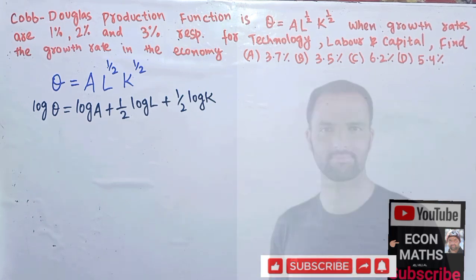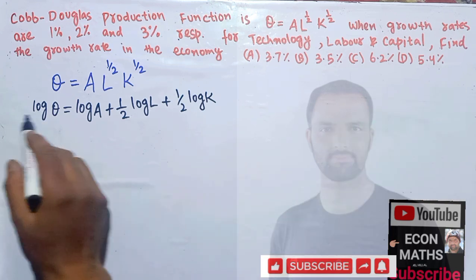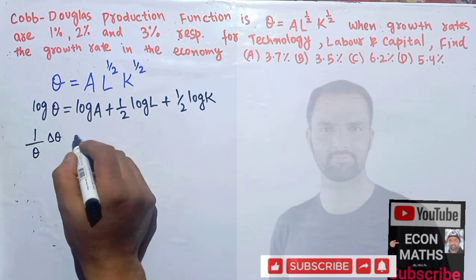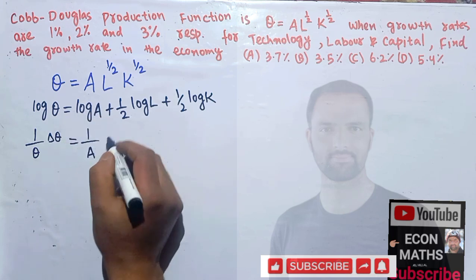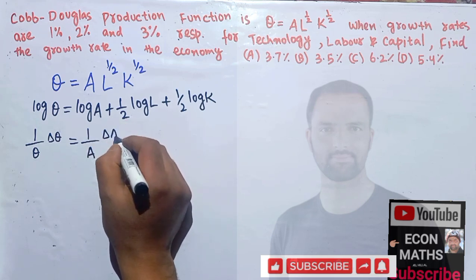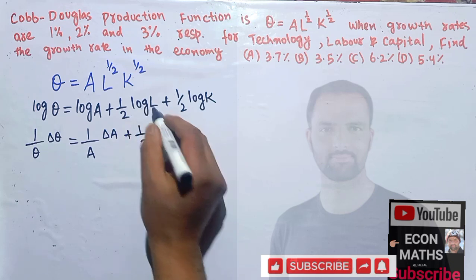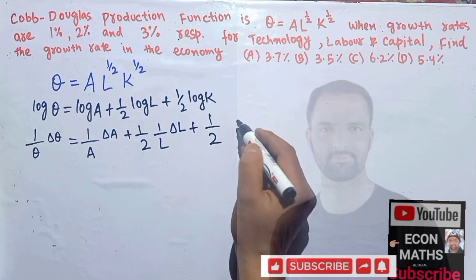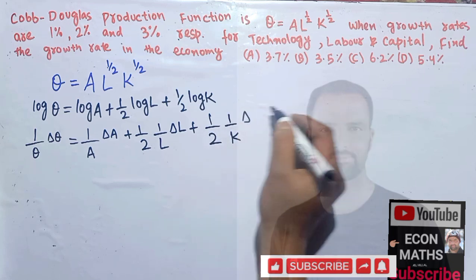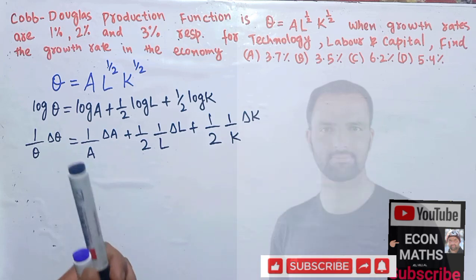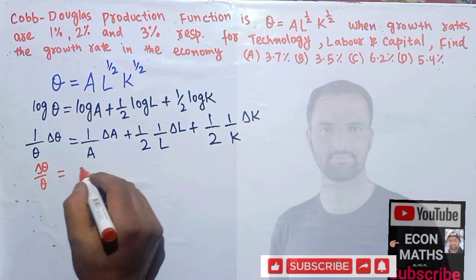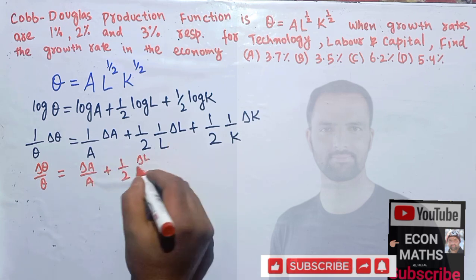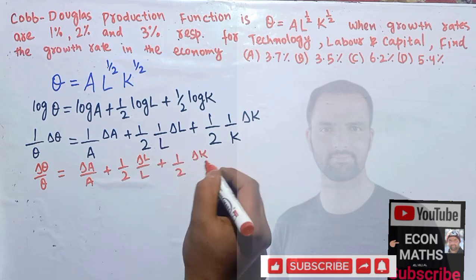Now what we need to do is take the differential on both sides. If we take the derivative with respect to Q, this becomes 1/Q into dQ. The derivative of log A is 1/A into dA, plus 1/2 — the derivative of log L is 1/L into dL — plus 1/2 — the derivative of log K is 1/K into dK. This gives us: dQ/Q is equal to dA/A plus 1/2 · dL/L plus 1/2 · dK/K.